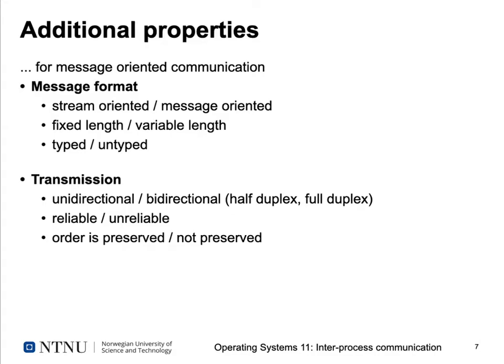For packet-based internet transmission, preserving packet order matters because packets from sender to receiver can take different routes and a later packet may overtake an earlier one. To restore the original order, packets must be numbered. The OS must provide buffer space to reorder late-arriving packets to their correct position in the data stream.